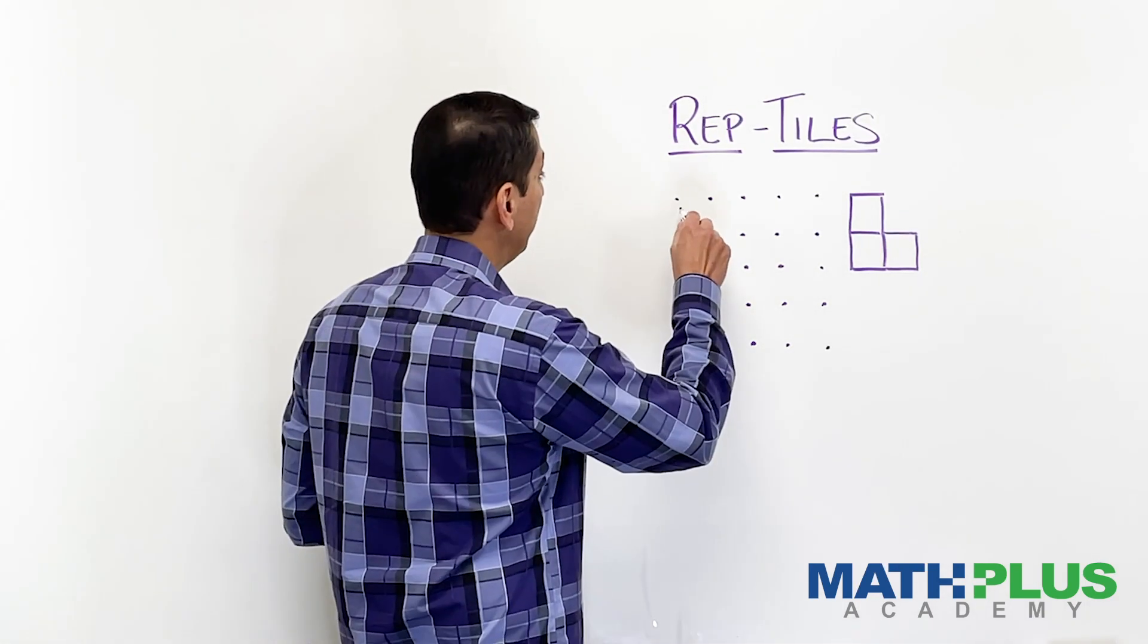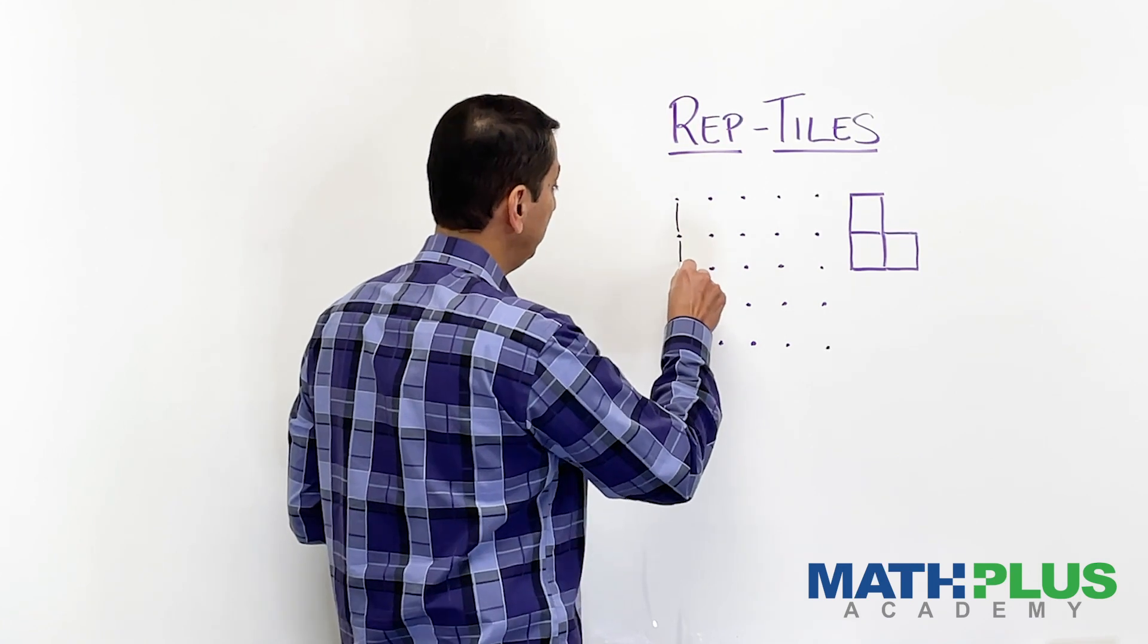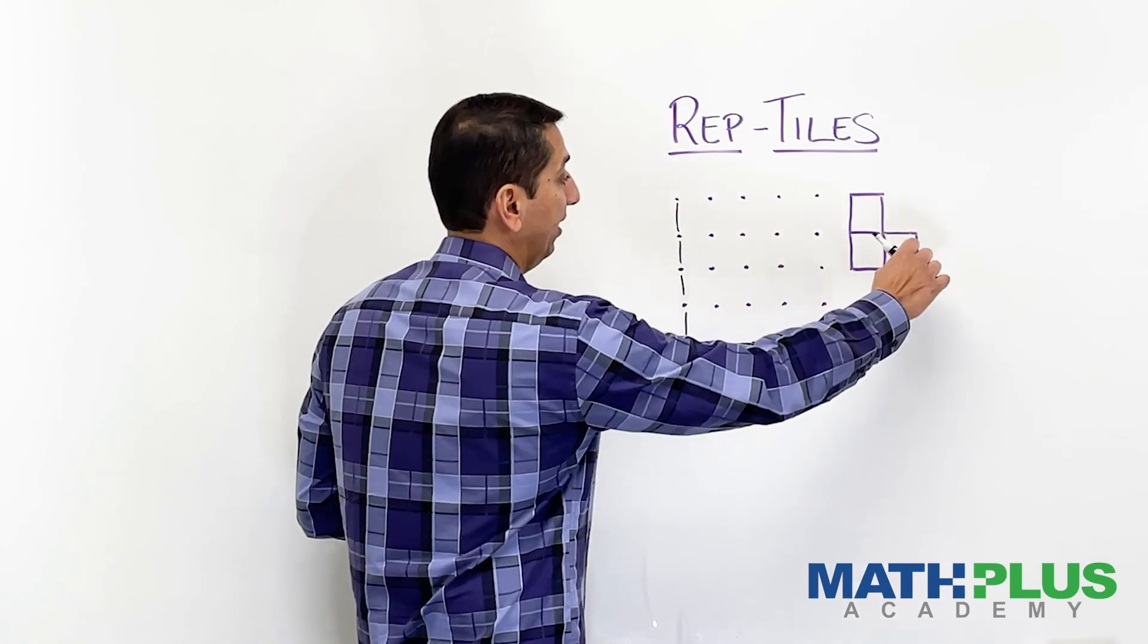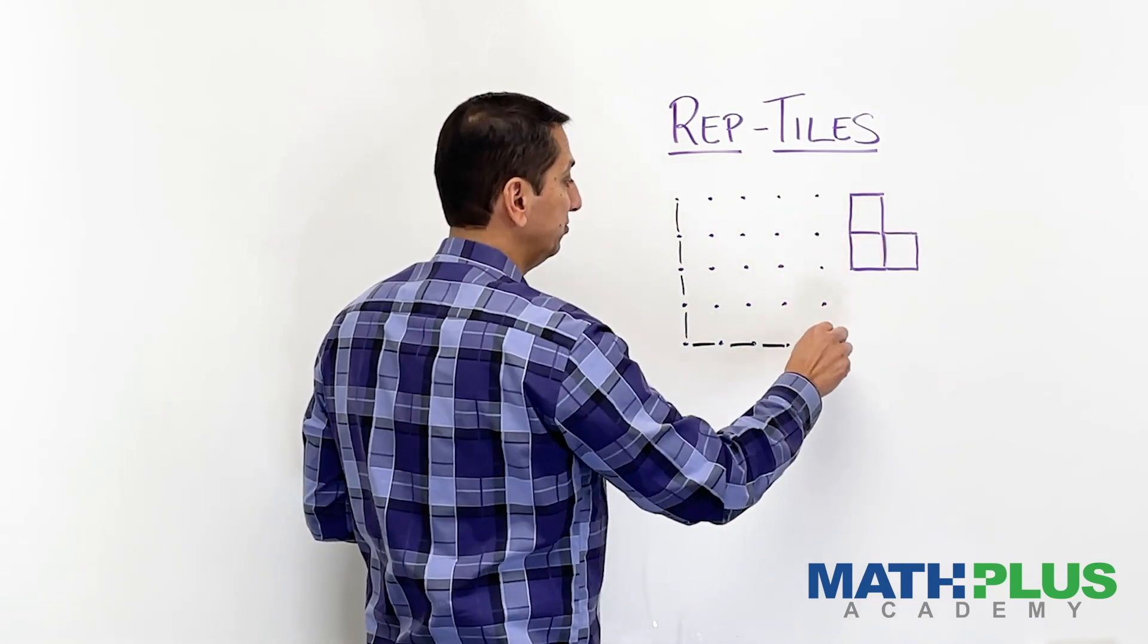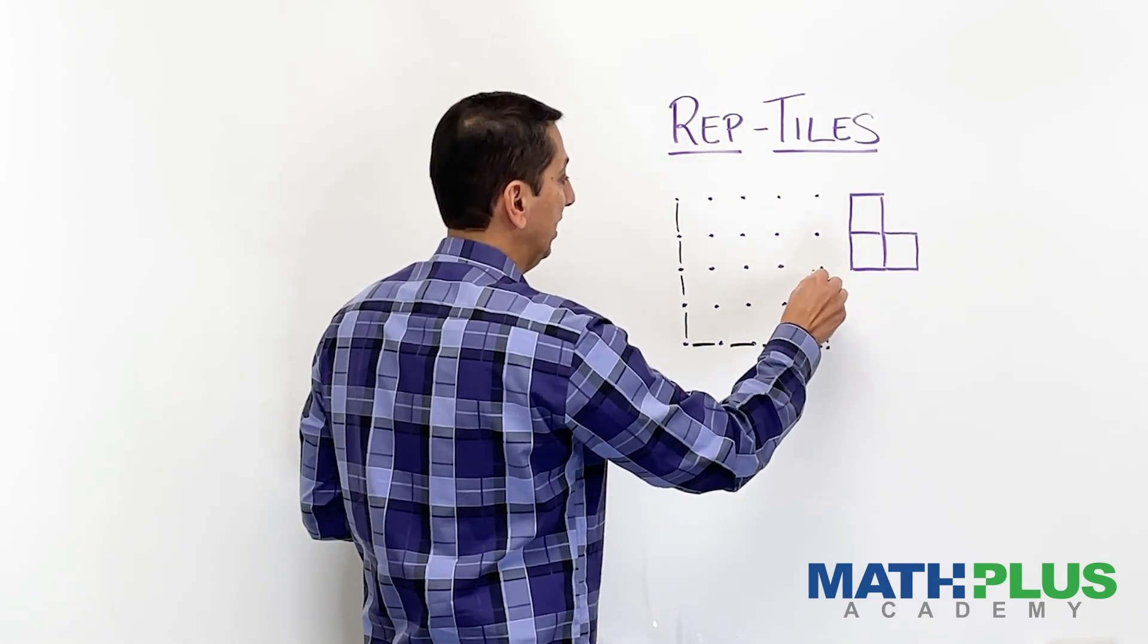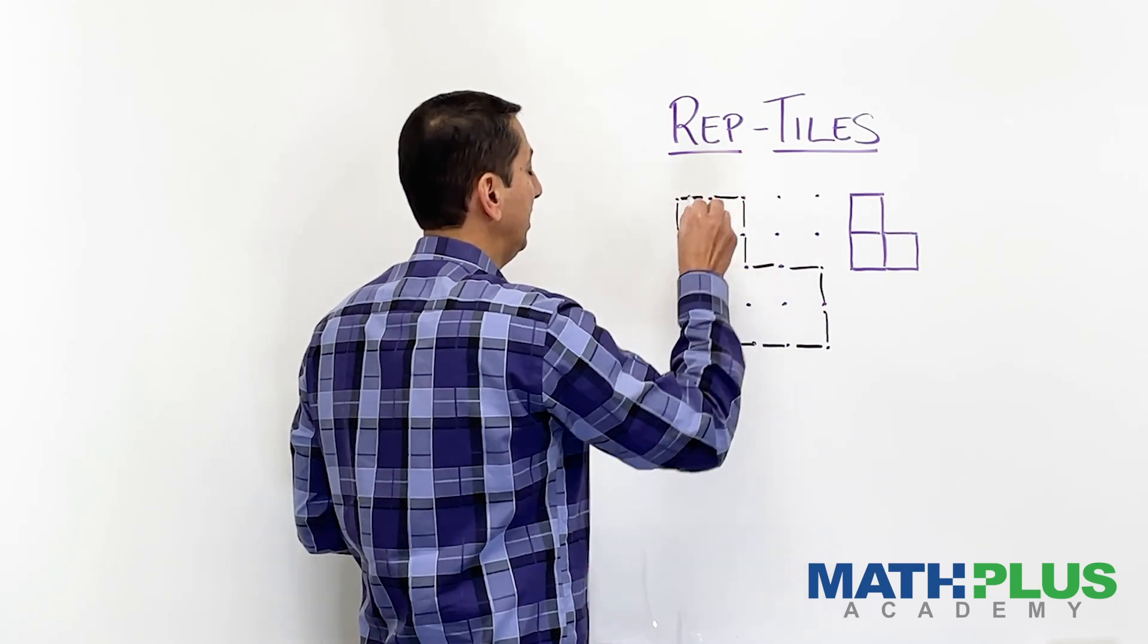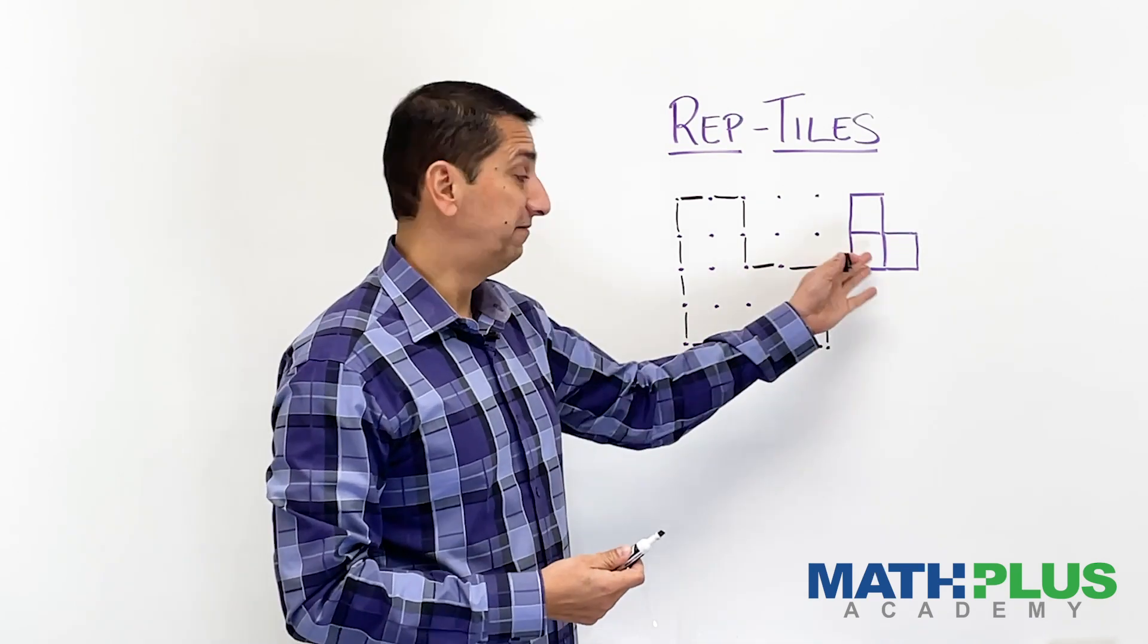of draw the outline of what that would look like. So one, two, three, four. One, two, three, four. Then one of these would now be two, so we'll go up two, and then over two. And so I have this scaled-up version of that.